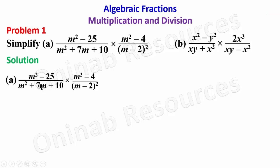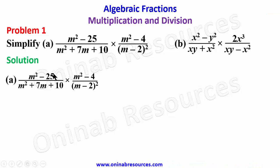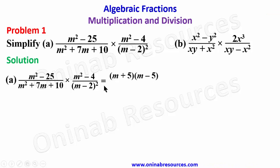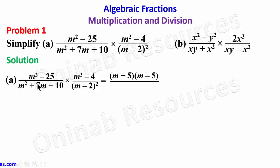So we have m squared minus 25. This is a difference of two squares since 25 can be written as 5 squared. Factorizing this gives m plus 5 into m minus 5. Then for the denominator, we need two factors of 10 whose sum gives positive 7. Those factors are 2 and 5, so factorizing gives m plus 5 into m plus 2.